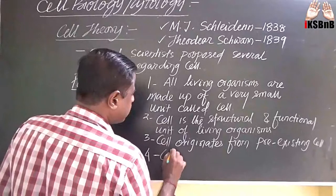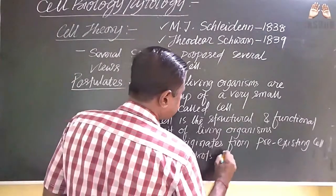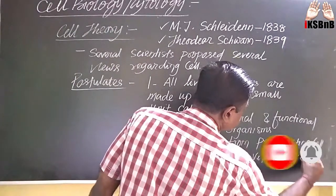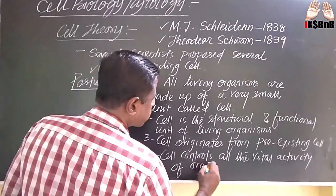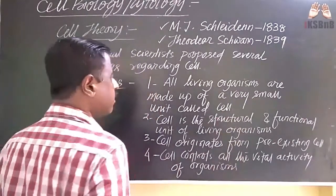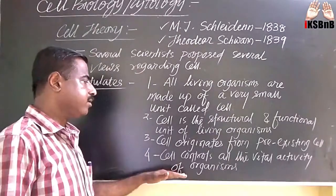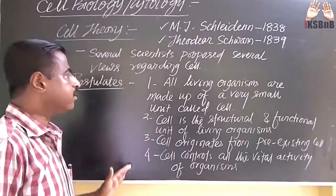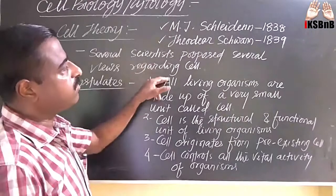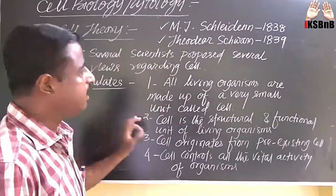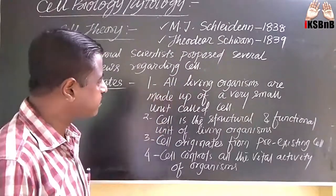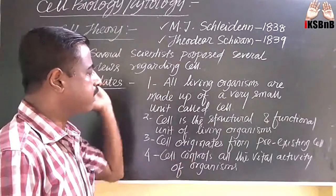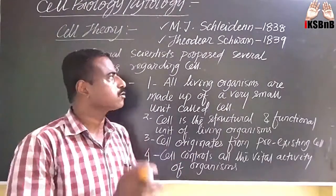Number 4: Cell controls all the vital activities of an organism. So these are the postulates of cell theory: all living organisms are made up of cells, cell is the structural and functional unit, cell originates from pre-existing cells, and cell controls all vital activities.